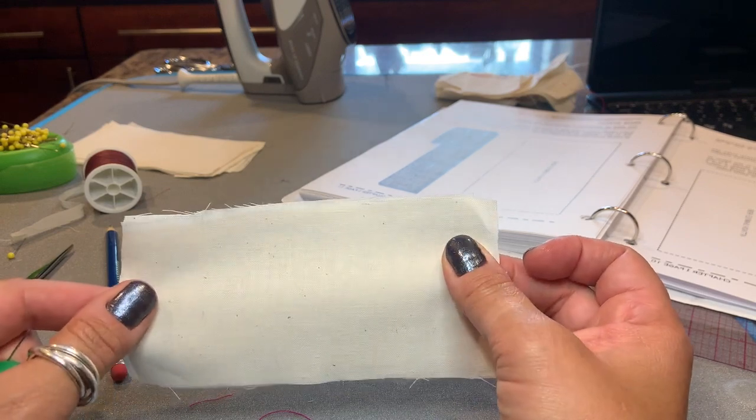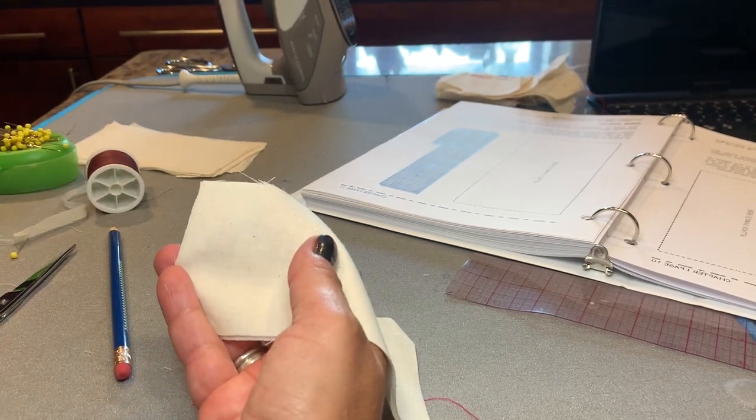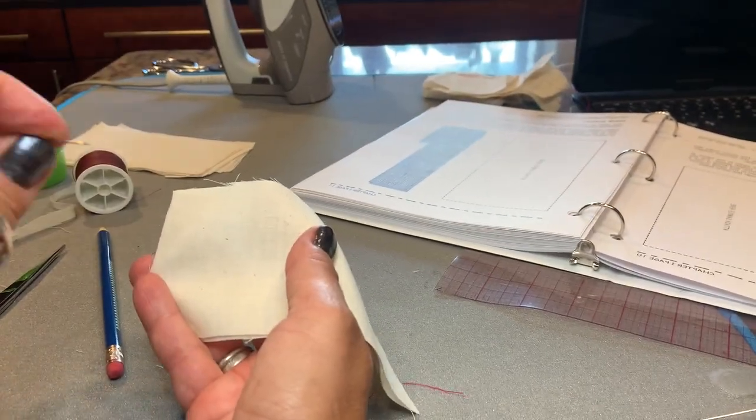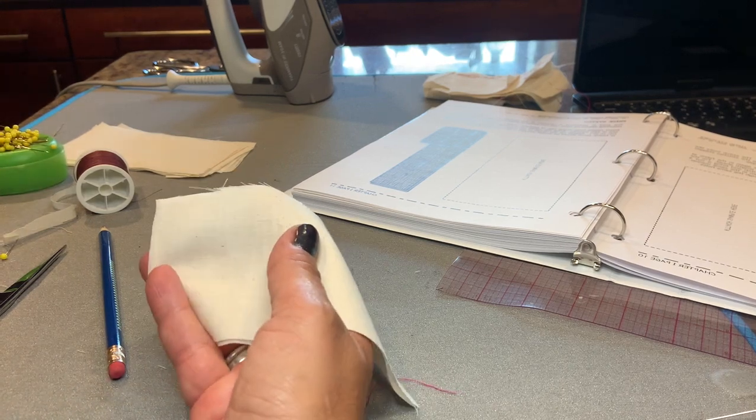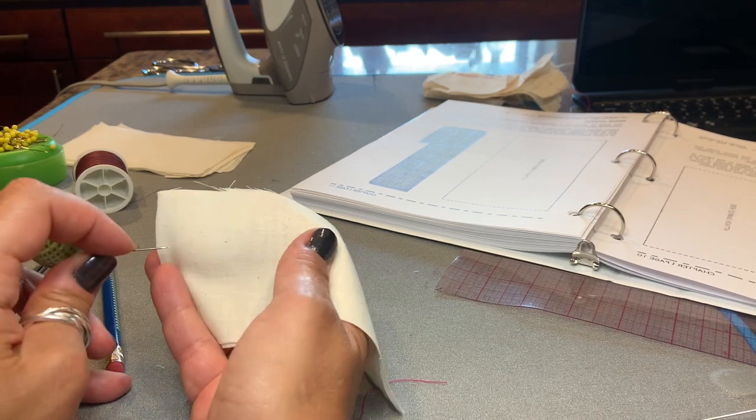It's very similar to the basting stitch, with the exception of one thing. So the first thing you're going to do, again, moving right to left if you're right-handed, left to right if you're left-handed, but the needle is going to always be moving in the same direction that you're moving in.